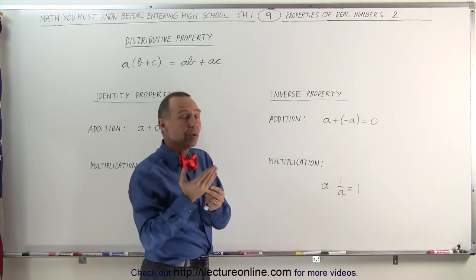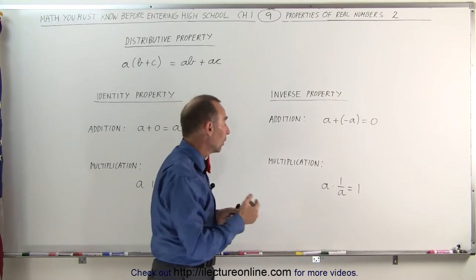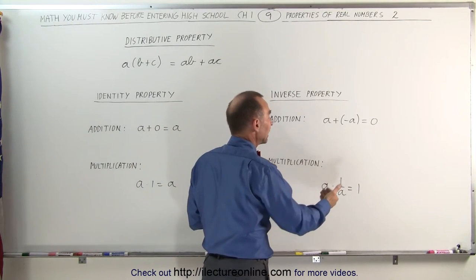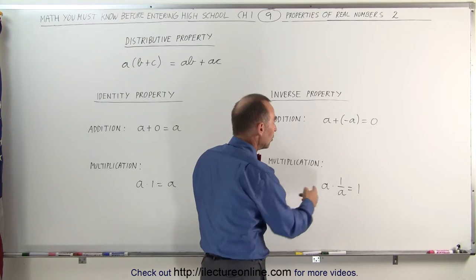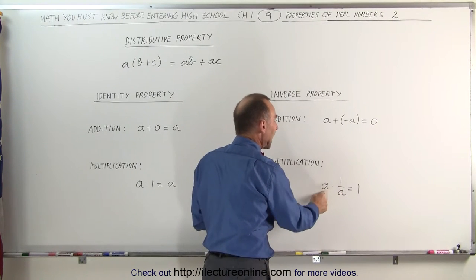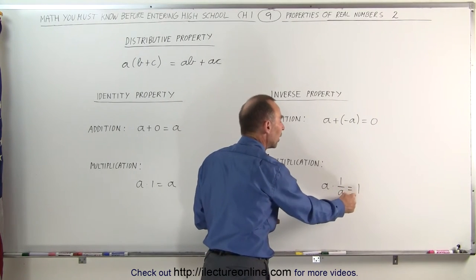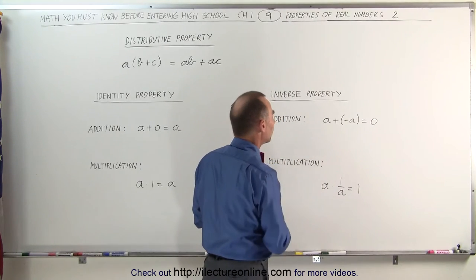Now with multiplication, what number can we multiply times another number and get one back? In this case, we do that with the inverse or we multiply a number by its inverse. a times one over a gives you one. This is the inverse property of multiplication.